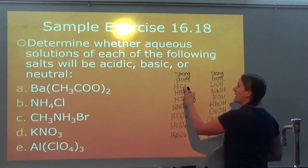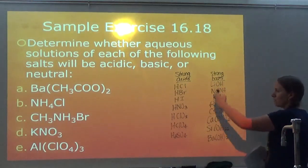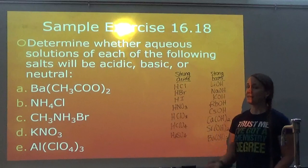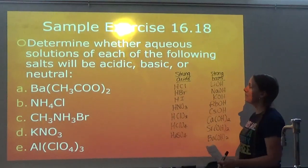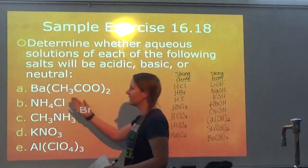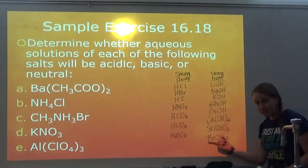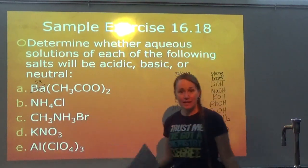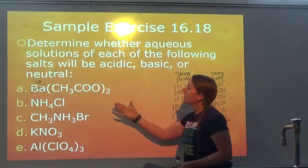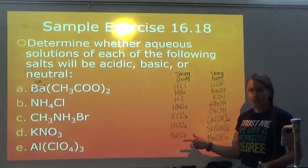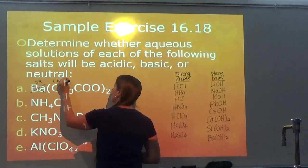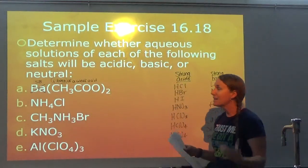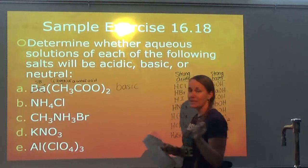We're looking for an anion from a strong acid or a cation from a strong base — the H's and OH's won't be listed. If it comes from strong, it doesn't affect the pH; if it comes from weak, we've got to figure out what's happening. For barium acetate: barium is part of a strong base, so it does not affect the pH. Acetate is not one of my strong acids, so it is the conjugate base of a weak acid, which means the solution is going to be basic.